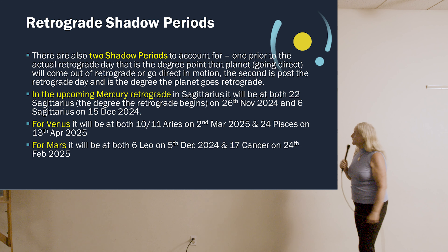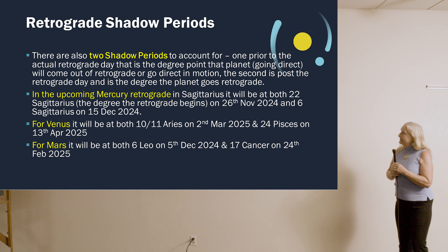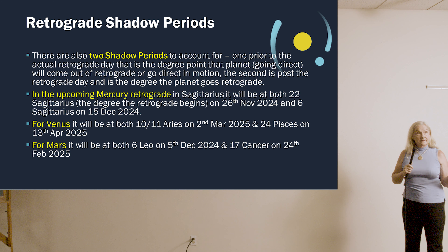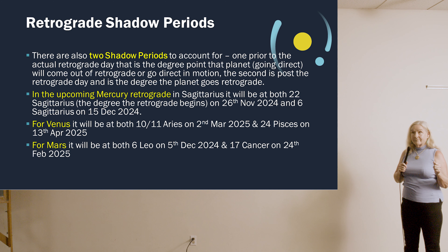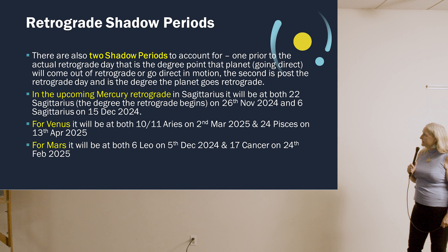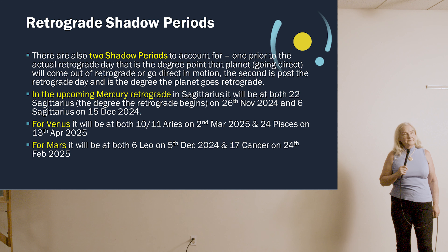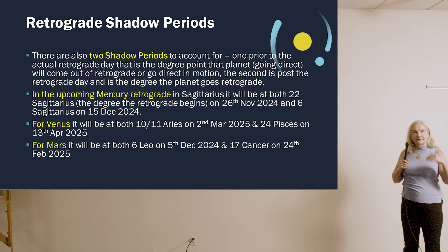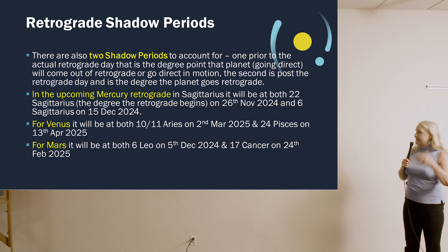Venus isn't until next year. Venus will be retrograde starting at 10-11 degrees of Aries on the 2nd of March 2025, and it will go direct on the 13th of April at 24 Pisces. We're going to be covering each of the houses towards the end of each section, so don't worry, we will go through all the houses.